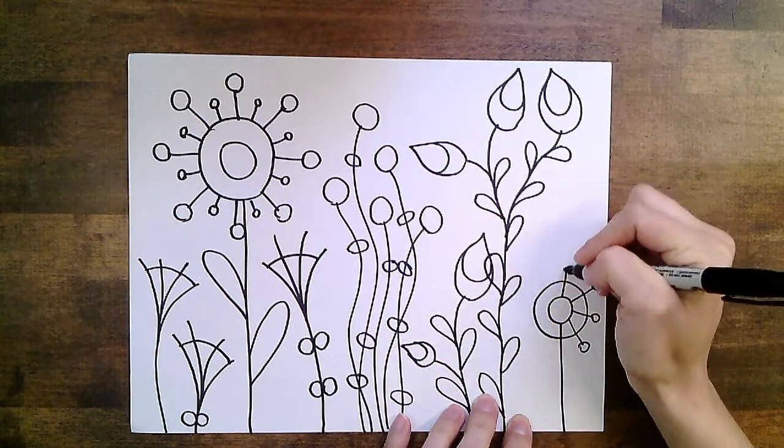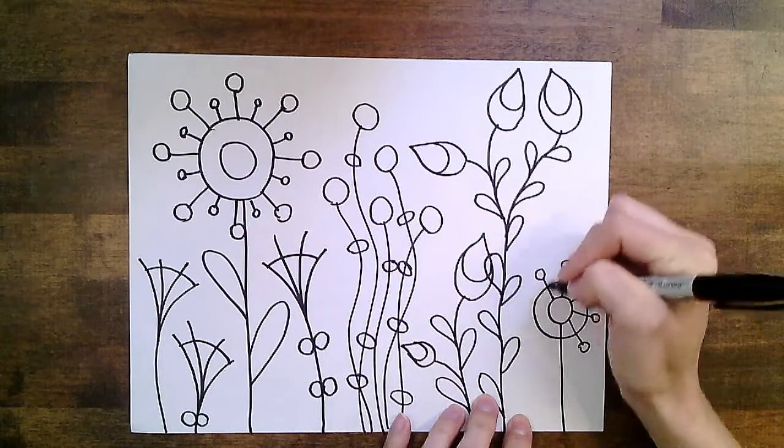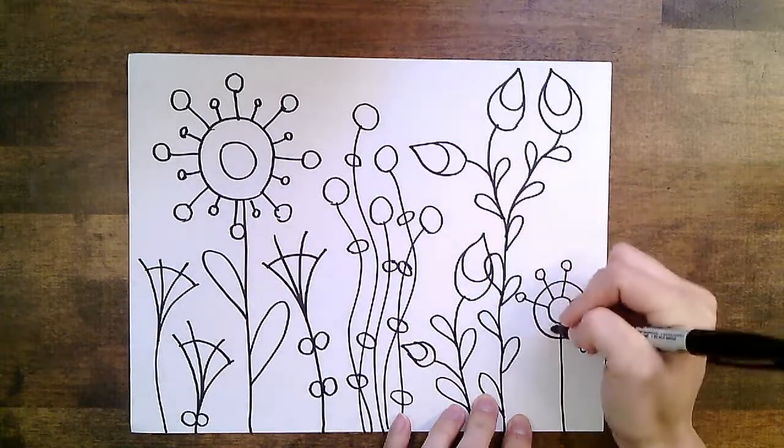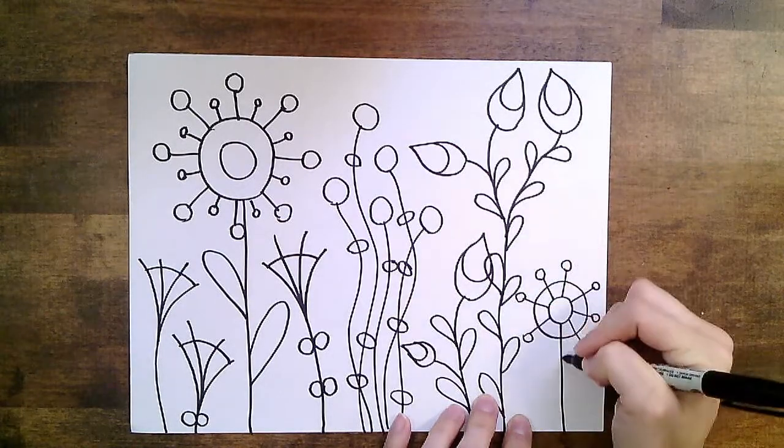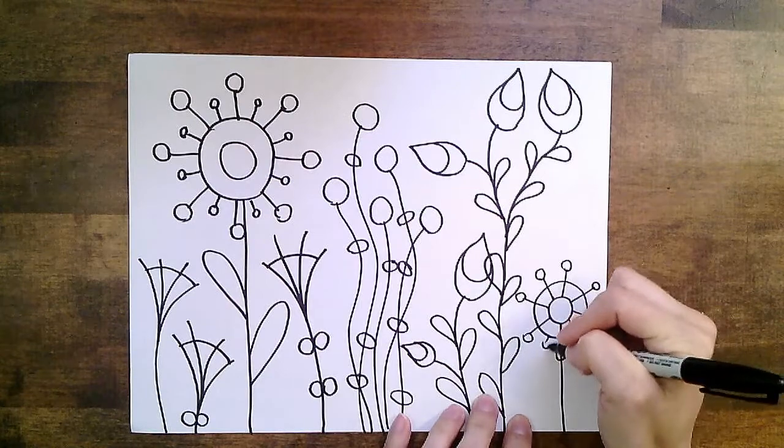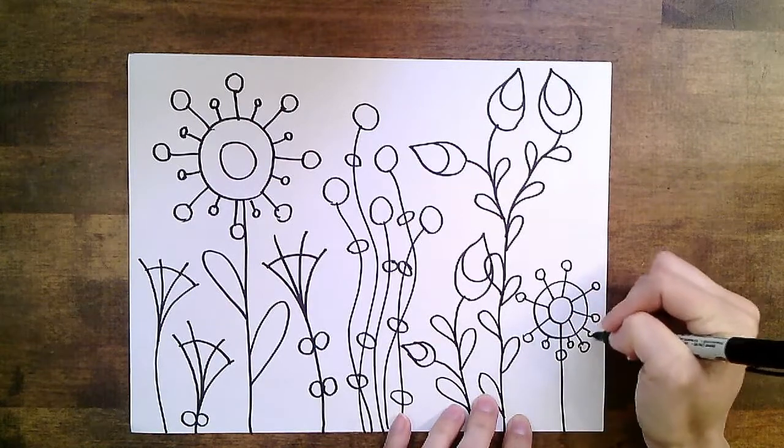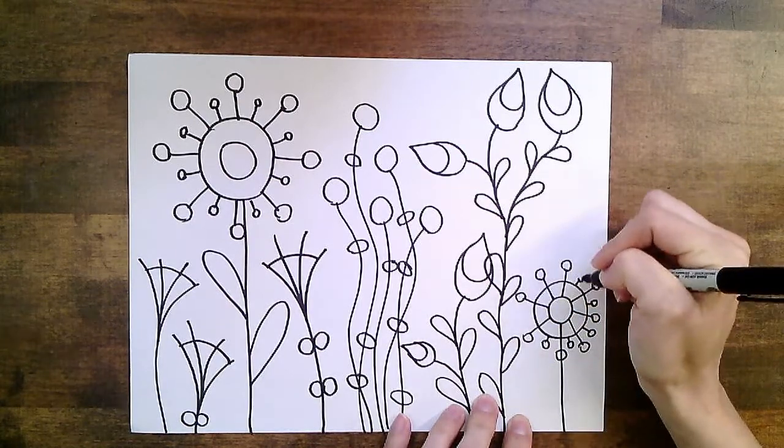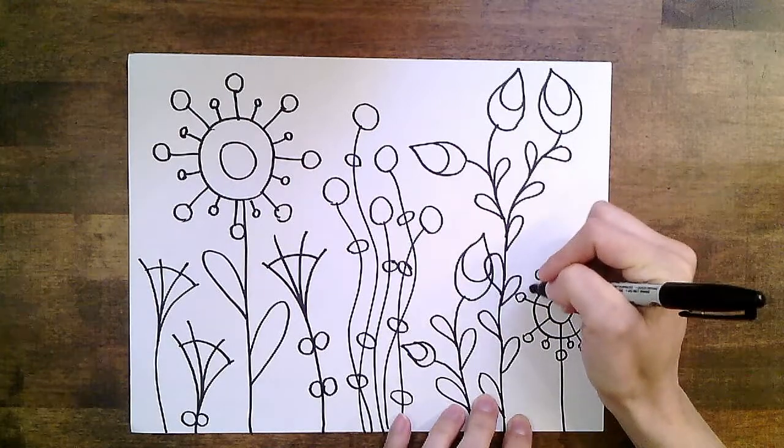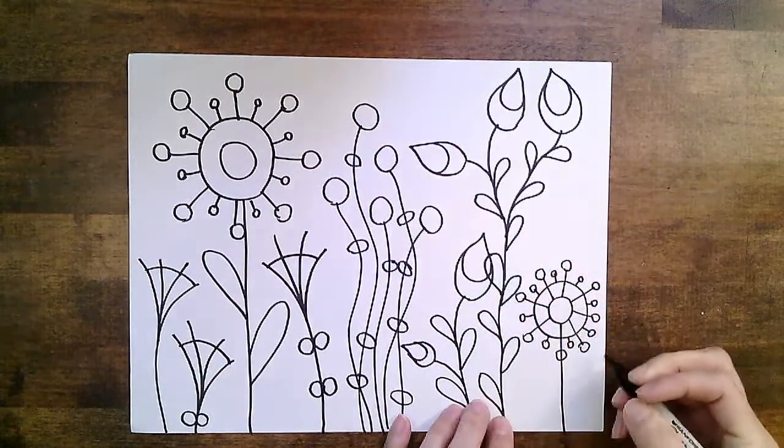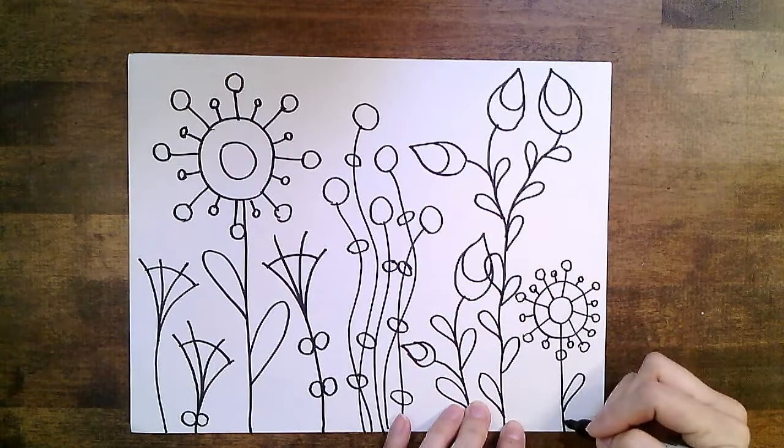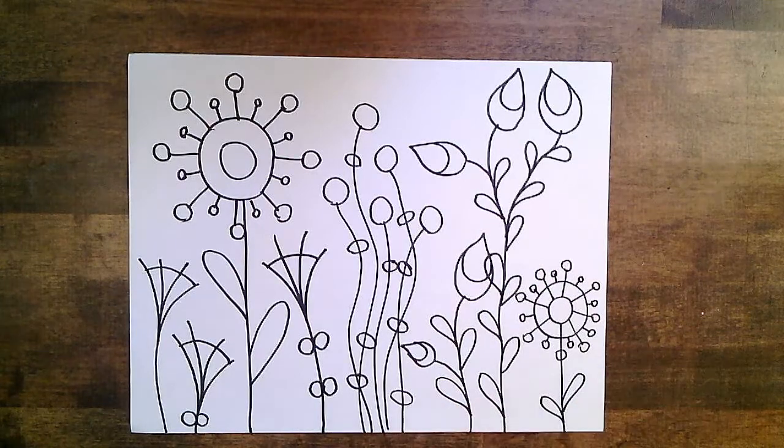With this flower, I'm going to make those lines overlap the big circle. And my little lines with little circles. A couple little leaves. And my doodle flowers are done.